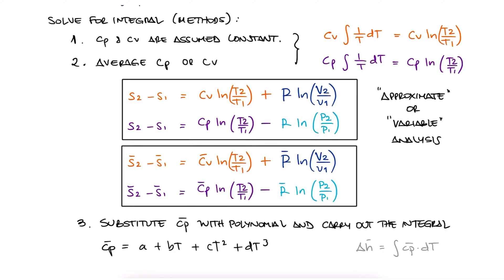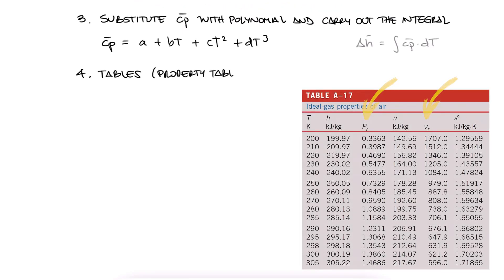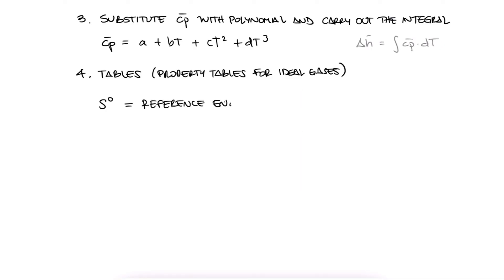But for ideal gases, you'll find that your tables have some other properties, including an s-value that has a degree symbol next to it. We call that the reference entropy, and of course, it's not the total entropy, but only a component of it.